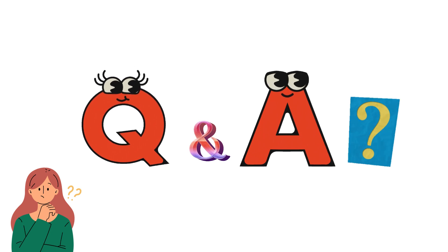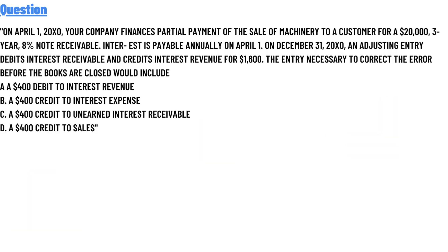Today's question: On April 1, 20X0, your company financed a purchase payment for the sale of machinery to a customer for $20,000 at three years, 8% interest. Notes receivable interest is payable annually on April 1. On December 31, 20X0, an adjusting entry debits interest receivable and credits interest revenue for $1,500.